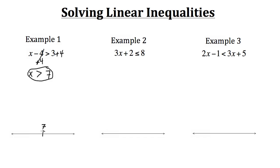But x is not equal to 7, so we use an open circle at 7. X can be any number bigger than 7, which is in the positive direction on the number line.